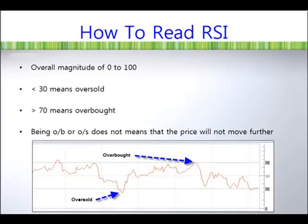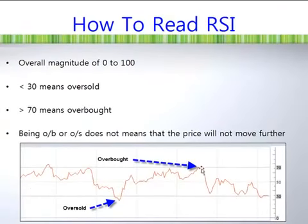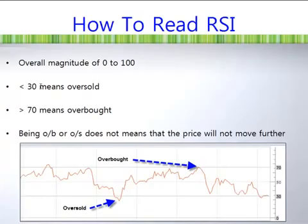Next, we need to understand how to read the RSI indicator. The RSI has an overall magnitude of 0 to 100. There is a 30 line and a 70 line. If RSI is below 30, the market is oversold; if it is above 70, the market is overbought. However, as a trader, we do not trade simply based on overbought or oversold signals alone — the price can still move further — so you need a good and effective way to use this RSI.